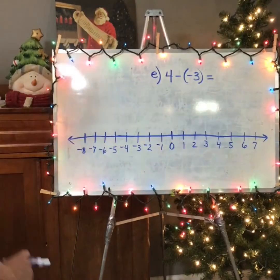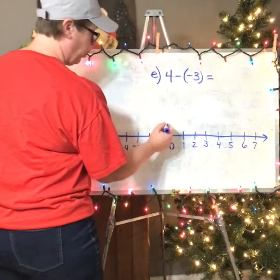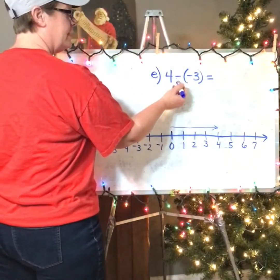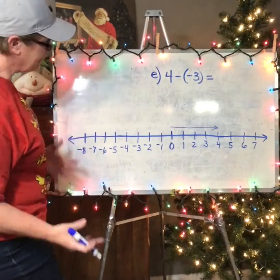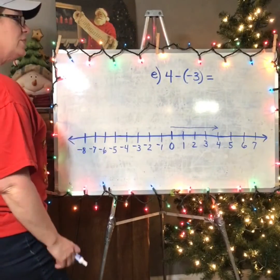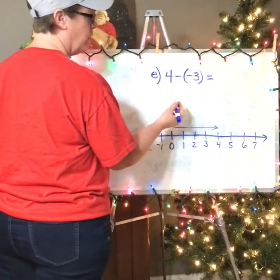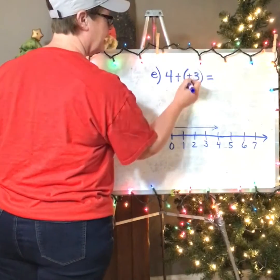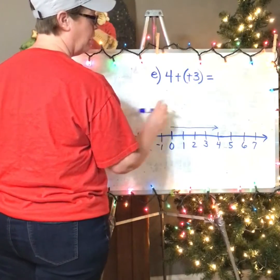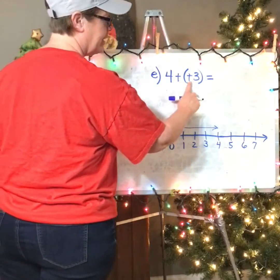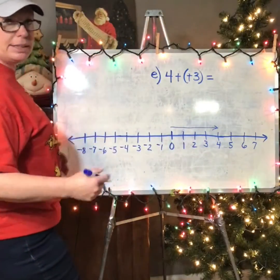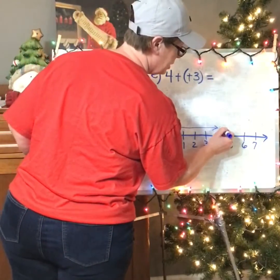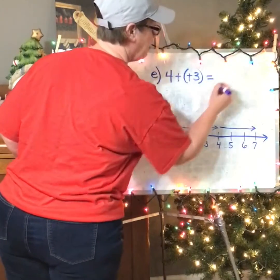Question E is 4 minus negative 3. I'm going to start at positive four. Then I'm going to take away three negatives, which never makes sense to me. So subtraction is the same as adding the opposite. Every time I have minus negative, it turns into plus plus when I change subtraction to addition and the second number goes opposite — minus minus always becomes plus. So I add three positives, which moves me to the right three times, and I end up at positive seven.